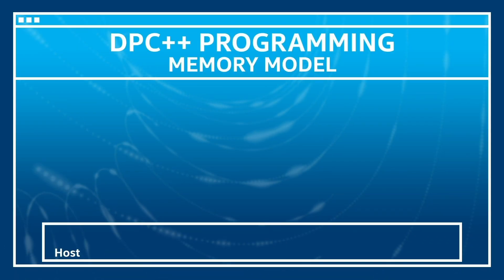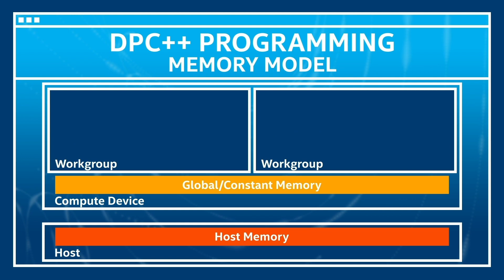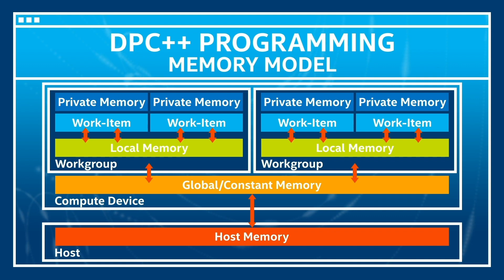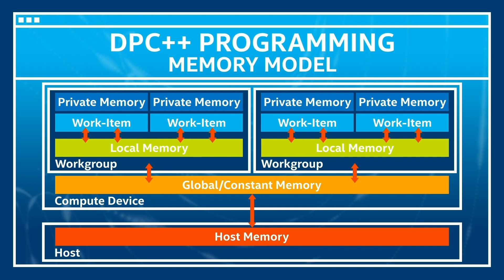Next is the memory model. The memory subsystem is divided into global, constant, local, and private memory. Global memory is accessible to all work groups and can be read from and written to. Constant memory is a read-only part of the global memory and is used by the host. Local memory is for each work group and is allocated per kernel execution. Private memory is similar to a CPU register. It stores variables created in the kernel and is per work item.